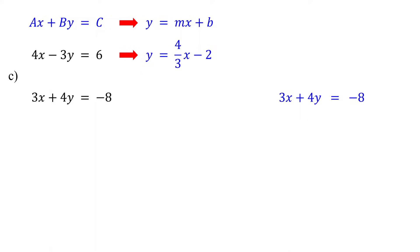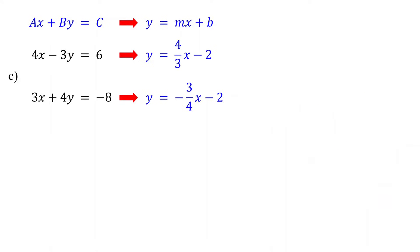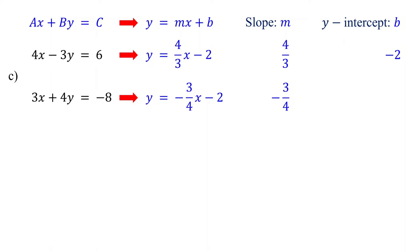For the second equation, start by subtracting 3x from both sides. Then divide both sides by 4 to isolate y. Now the second equation is also in slope-intercept form. Next, identify the slopes and y-intercepts. The slope of the first equation is 4 thirds and its y-intercept is negative 2. The slope of the second equation is negative 3 fourths and its y-intercept is negative 2.